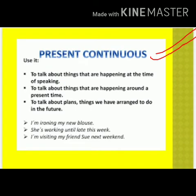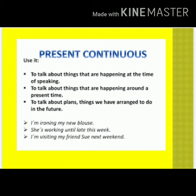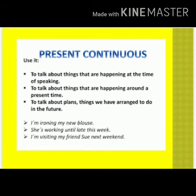Let us now discuss when we use present continuous tense. First, we use it to talk about things happening at the time of speaking — 'I am teaching you grammar.' Second, to talk about things happening around the present time — 'She is working until late this week,' meaning she will work till late the whole week. Third, to talk about future plans or arranged activities — 'I am visiting my friend next weekend' and 'I am going to teach you past tense in the next video.' So these are all the uses of present continuous tense.